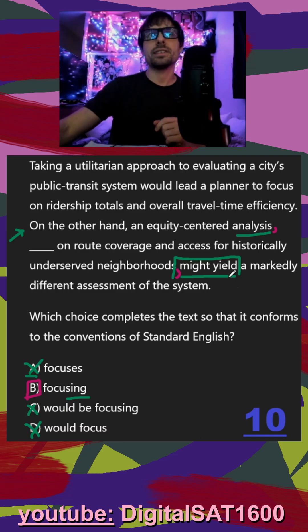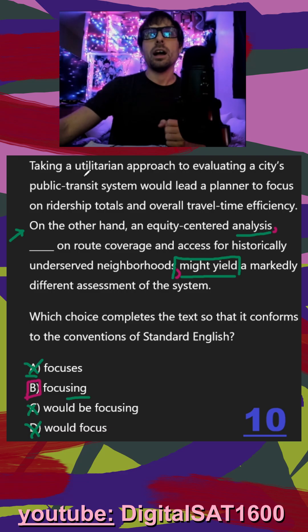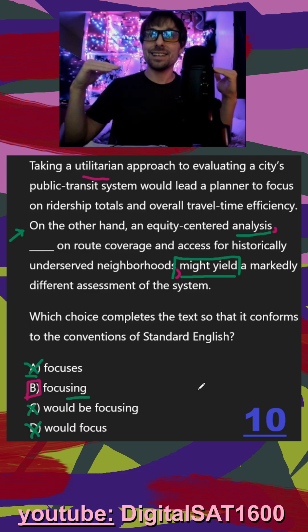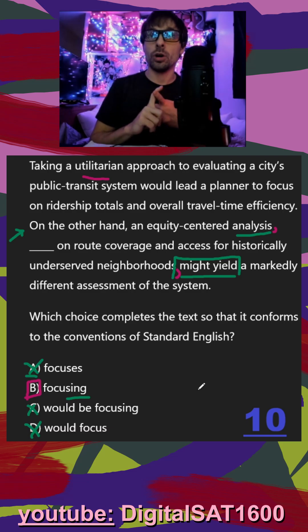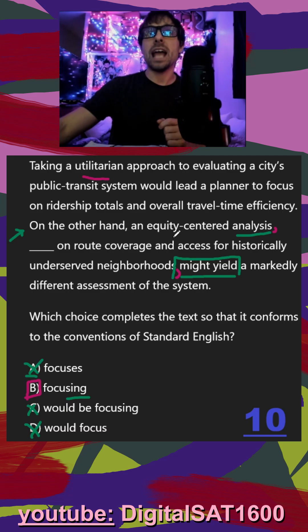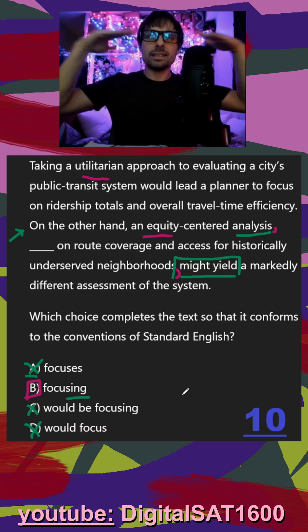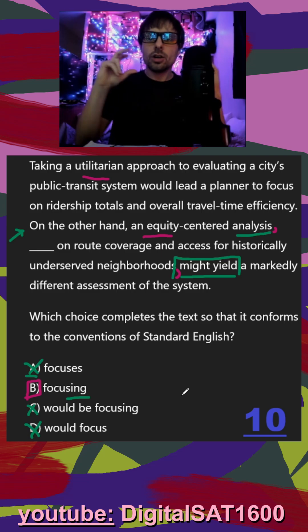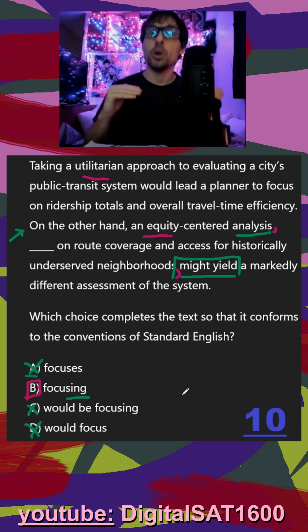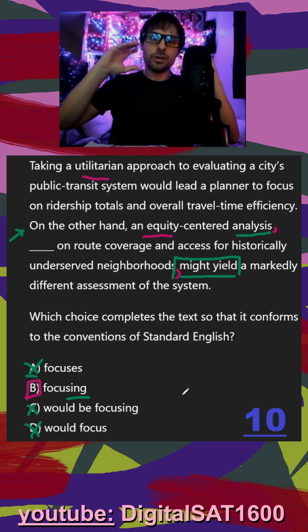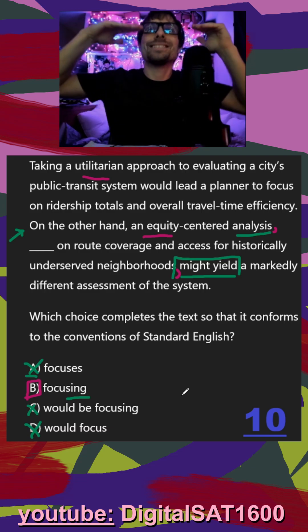For bonus points, if we did want to look at the passage — if it was more of a reading passage instead of grammar — the utilitarian approach would be more focused on overall success, like how can we just increase overall ridership numbers. As opposed to an equity-centered analysis, that would be focusing more on the baseline average of ridership — let's go ahead and try to help the people that are below the baseline, the underserved communities, the people that are struggling more. Let's try to go to the most struggling people and raise them up to that baseline.